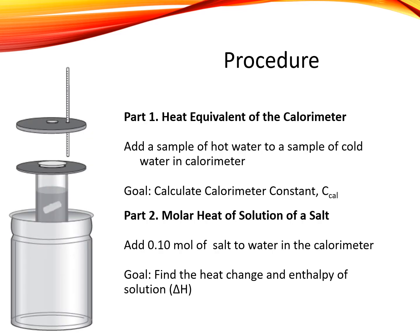For this experiment, there are a couple parts. First, we're going to figure out the calorimeter constant by adding a sample of hot water to a sample of cold water and observing the heat change. For part two, we're going to figure out the heat of solution of a salt by adding one-tenth of a mole of that salt to water and observing the heat change. From there, we can figure out the enthalpy of the solution.